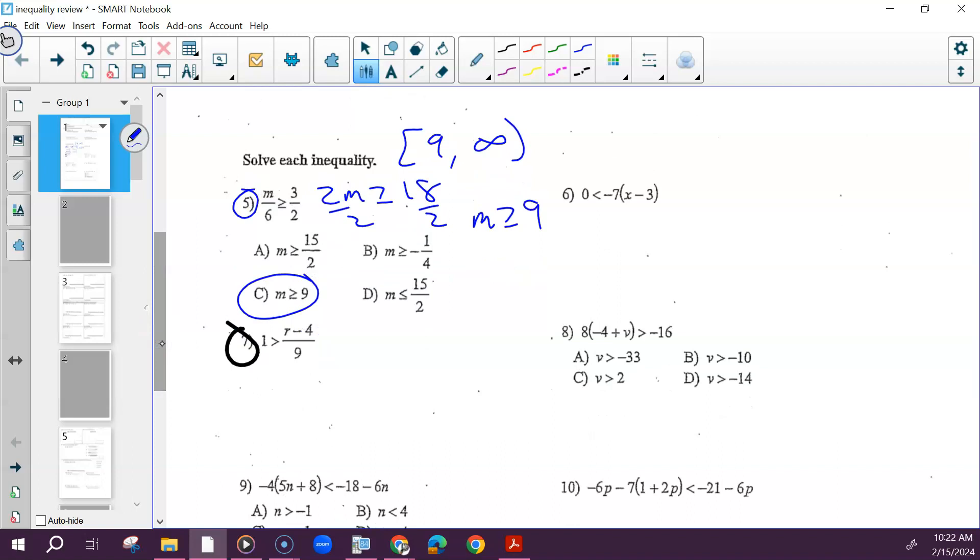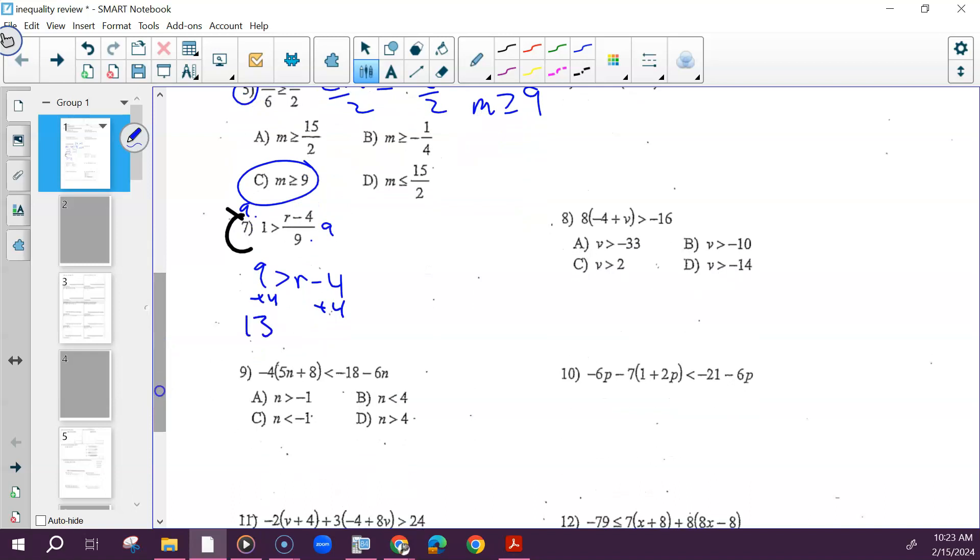Number seven, we have to get R by itself. So we've got to get rid of 9. Multiply that on both sides. And then solve that like normal. Get rid of 4 by adding. And then you can take this whole thing and flip it. Make sure the sign is facing the same way it was or was not facing before to the R. It's facing away from the R, so it's facing away from the R.